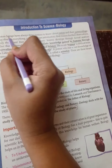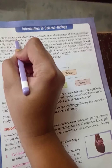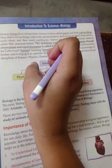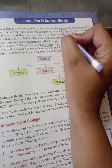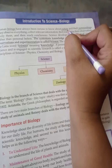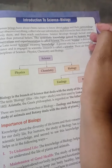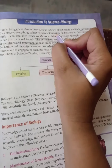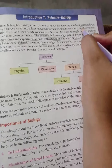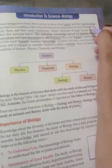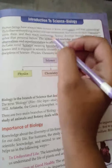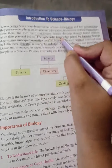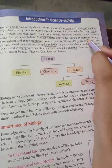Human beings have always been curious to know about nature and their surroundings. They gather information, knowledge, and observations, and reach conclusions. Science is the systematic knowledge gained by humans.